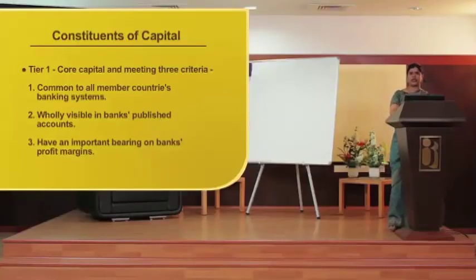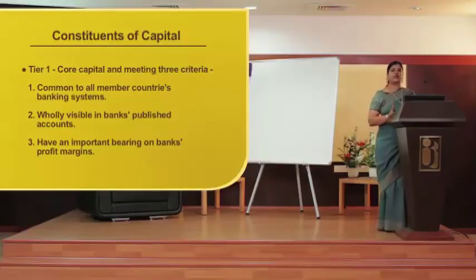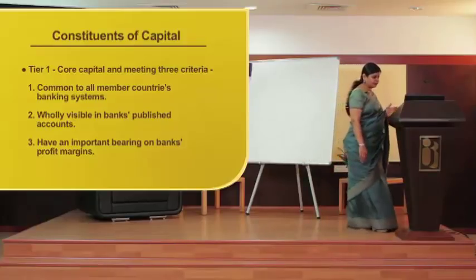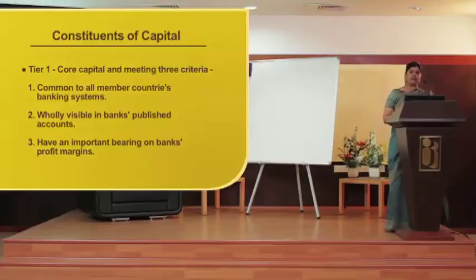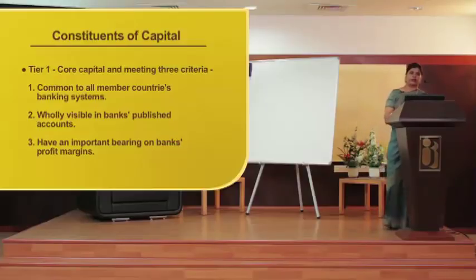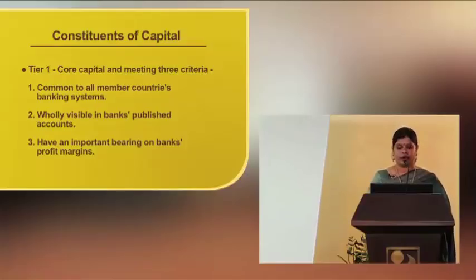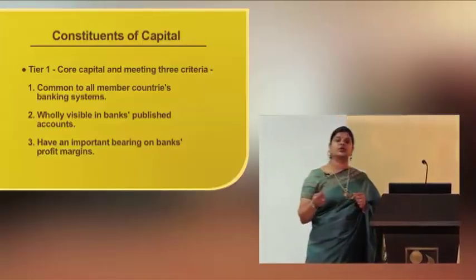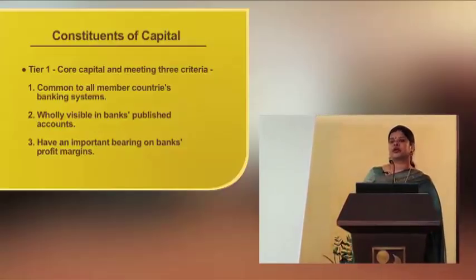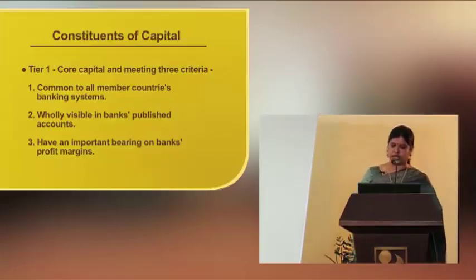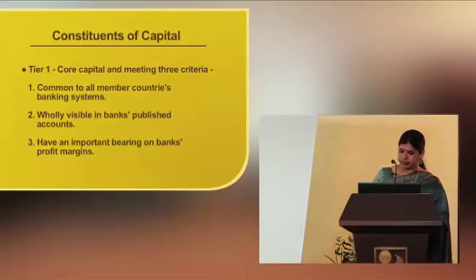The major two constituents of capital are Tier 1 and Tier 2 capital. Tier 1 is the core capital, meeting three criteria: it is common to all member countries in the banking system; it is wholly visible in the bank's published accounts — so it is disclosed capital; and it has an important bearing on the bank's profit margin, making it the most crucial part of capital.